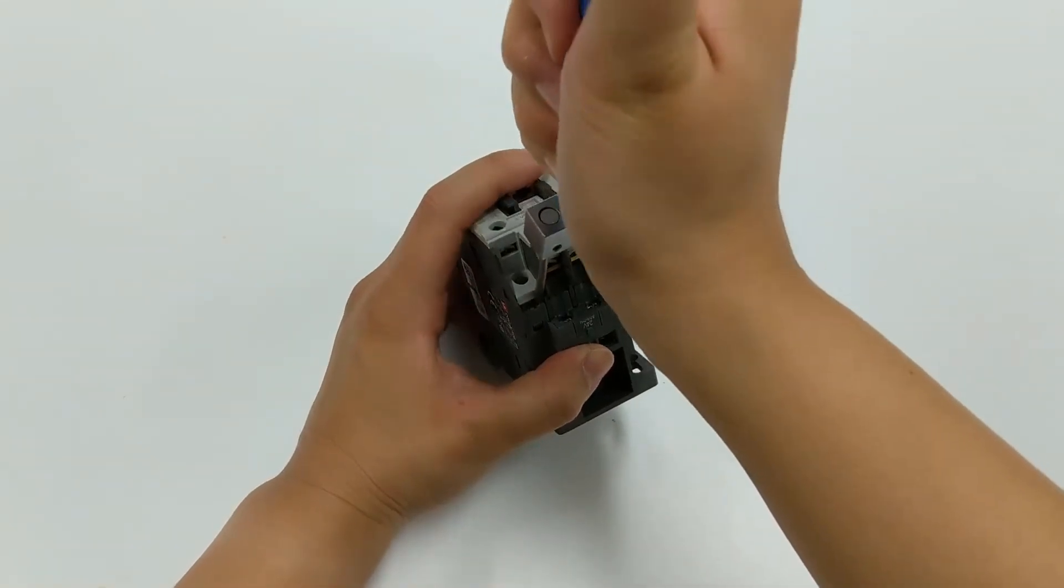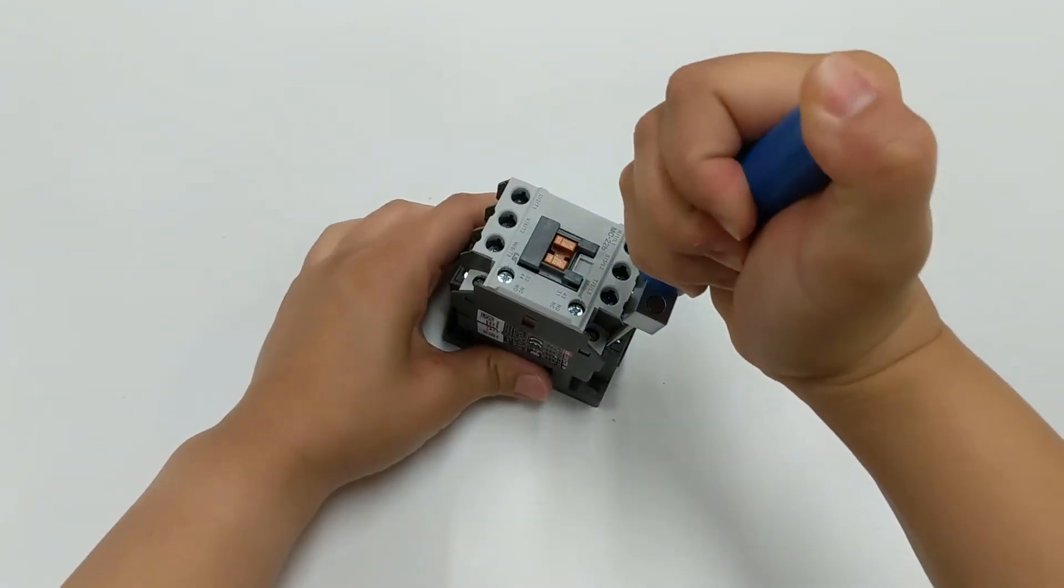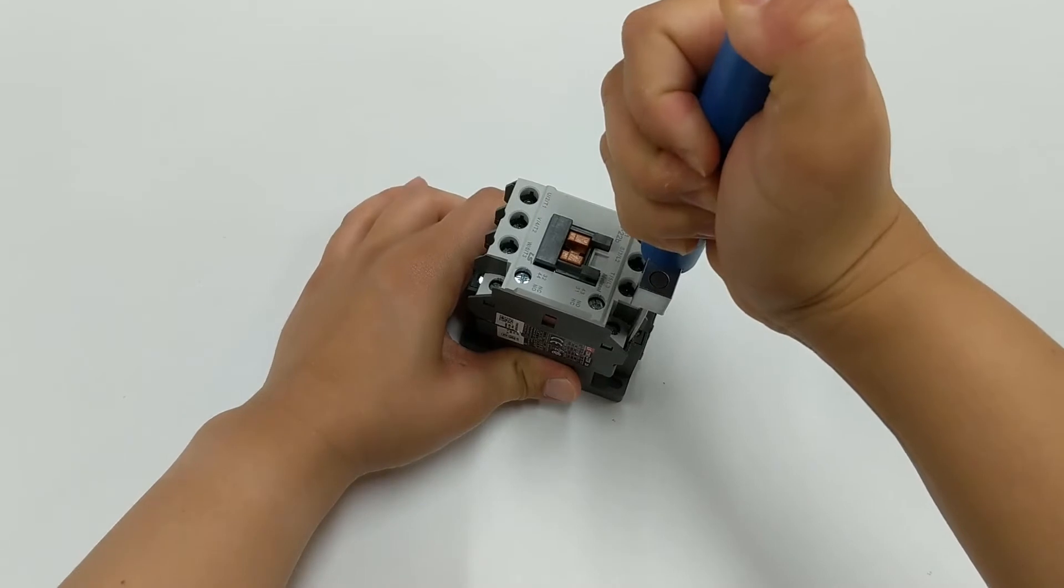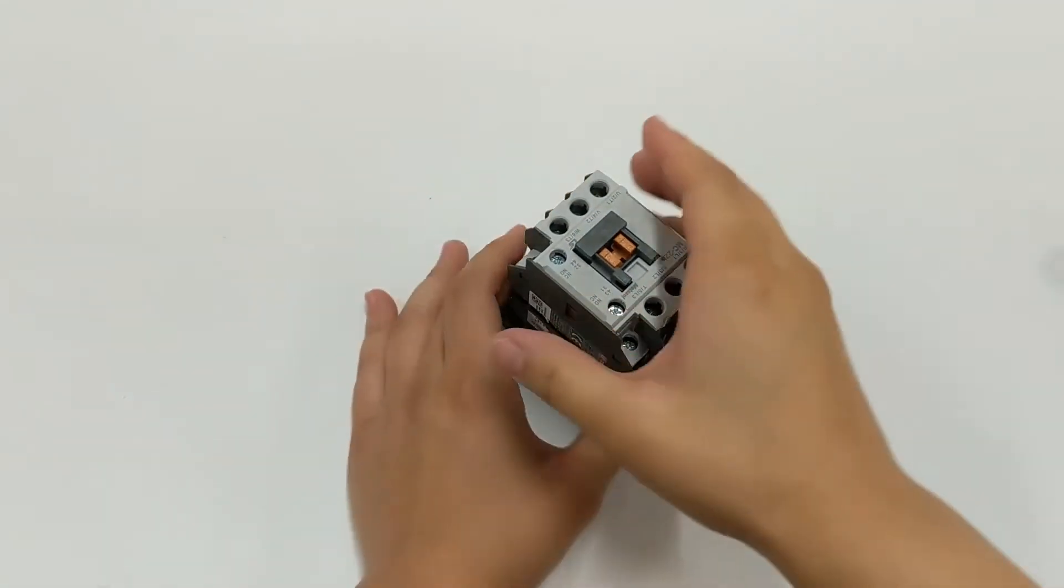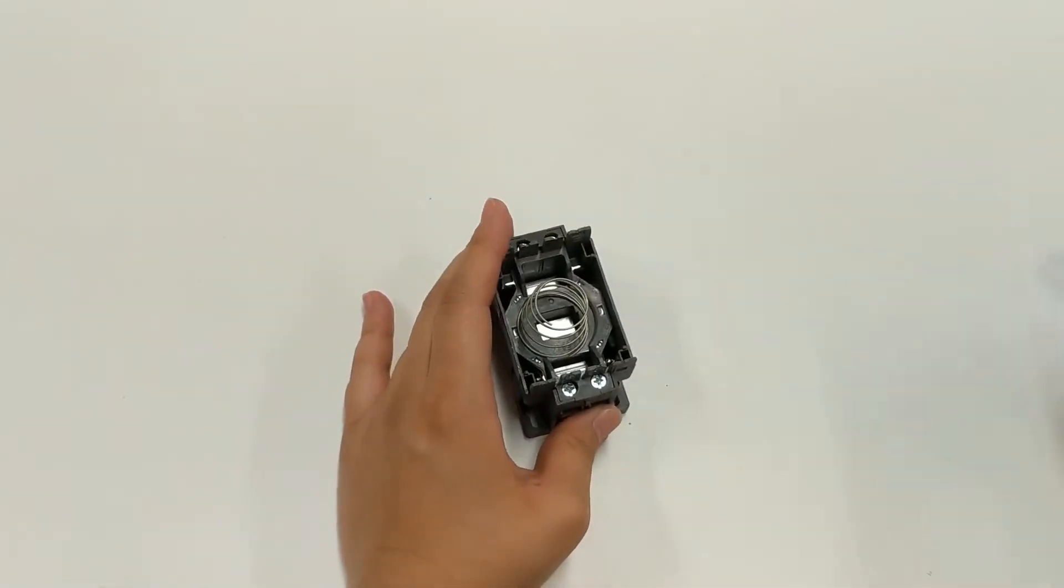Repeat on the other side to fully separate the bottom half from the top half. Then remove the top half and the spring, and then we can lift the coil out and slide in the replacement coil.